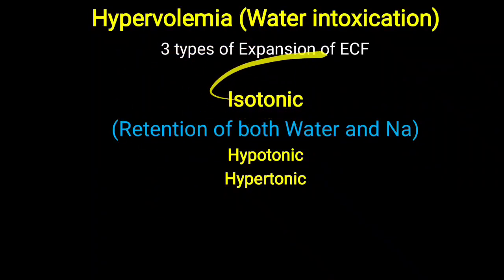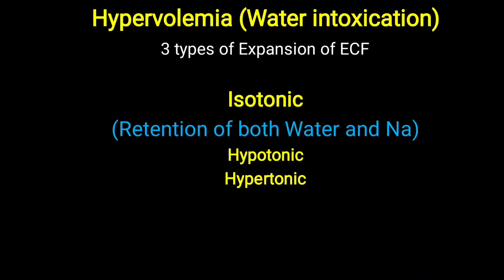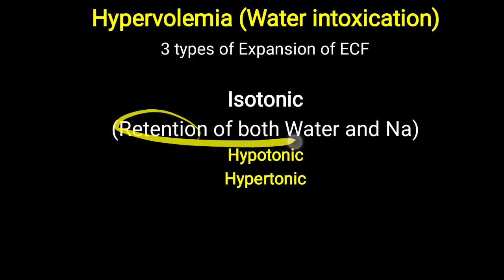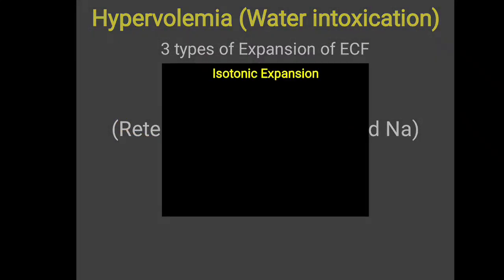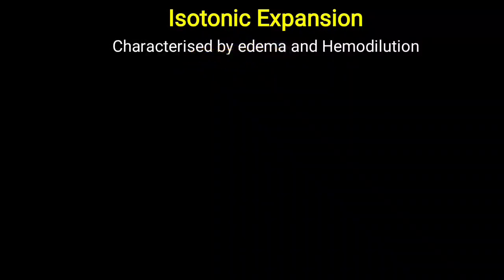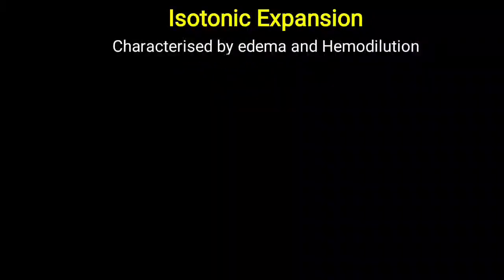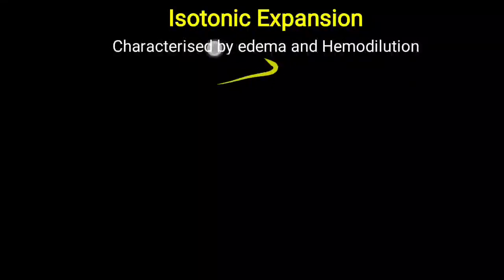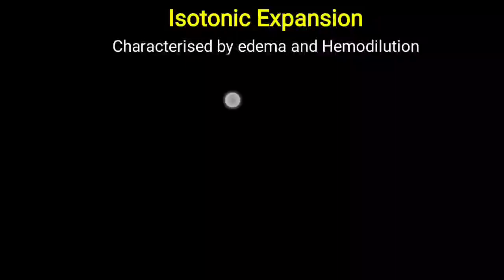In this video we will look at why isotonic expansion of extracellular fluid occurs, the basic reasons, the biochemical changes, compensatory mechanisms, and causes. Isotonic expansion is characterized by edema. Due to excessive accumulation of water and sodium, excessive fluid accumulates in the tissue interstitial space, which appears as edema.